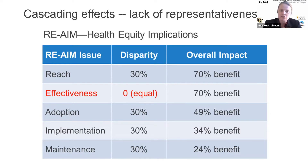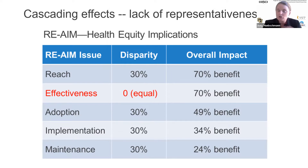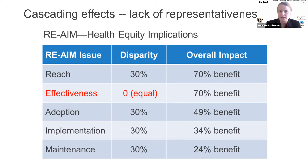When there's a disparity in REACH, then there's a disparity in the impact — only 70% would benefit — and as you go down, even if effectiveness is equal and there's not an inequity in how effective the program is, inequities or lack of representativeness at the other levels of reach, adoption, implementation, and maintenance will lead to quite an inequity in the end for different populations.